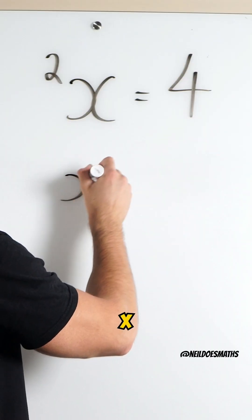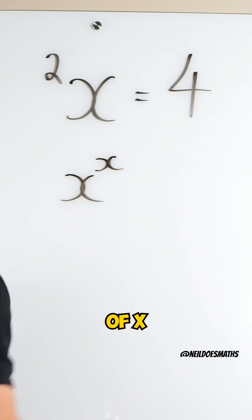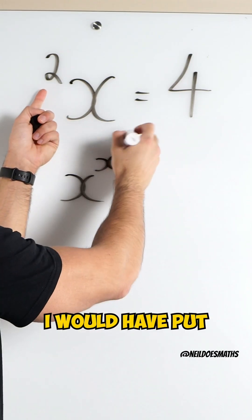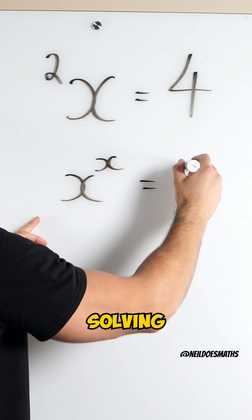It's gonna look like this: x to the power of x. If this was 3 I would have put another x there. So I'm actually solving this.